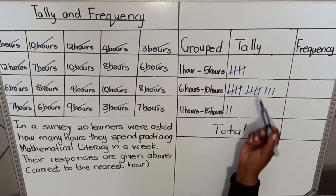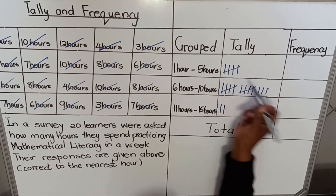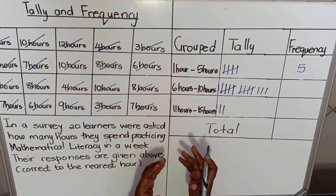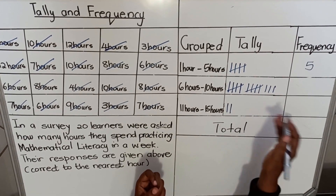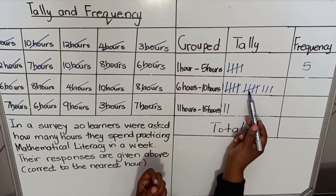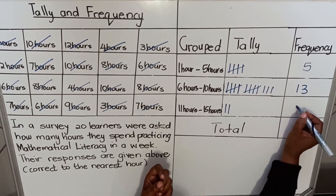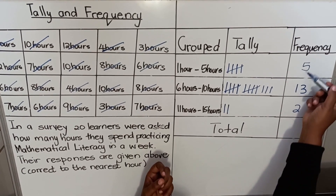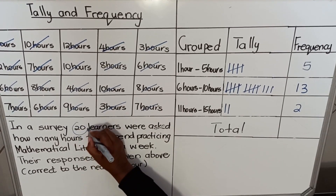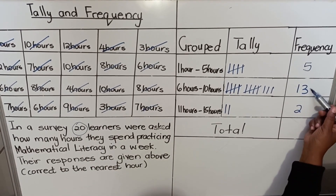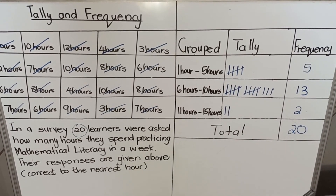Now we do frequency. Frequency tells you how many are in each category. A crossed tally group is five — that's why tallies are useful for large data sets, like 100 responses. This category has five, this one has ten, this one has thirteen, and that one has two. When you add all frequencies, they must equal the total number surveyed: 13 plus 2 is 15, plus 5 is 20. That confirms everything is correct.